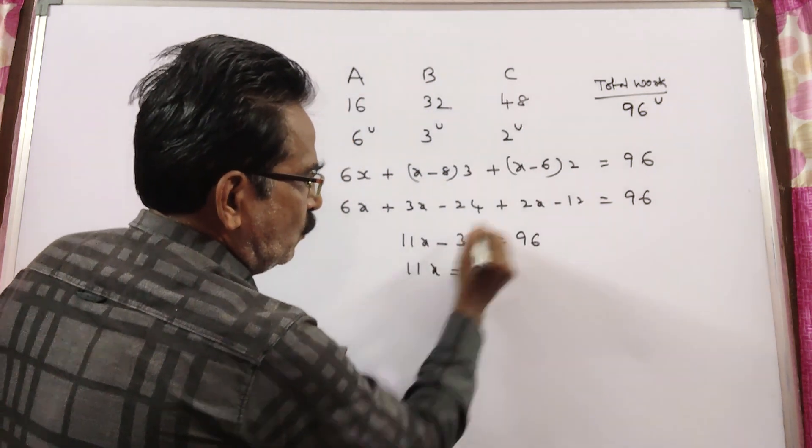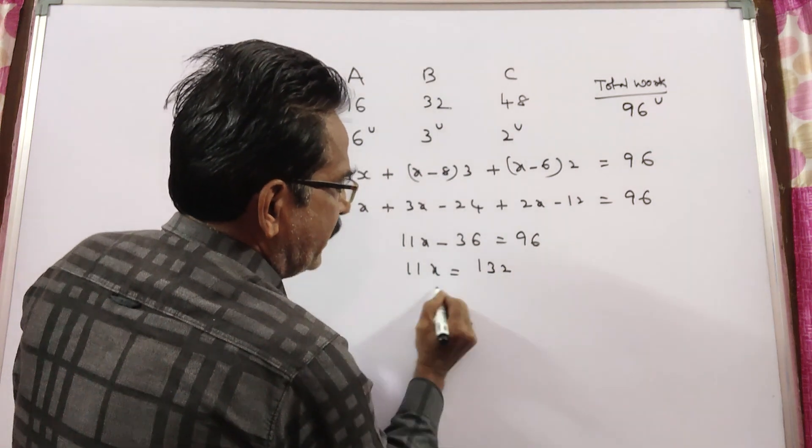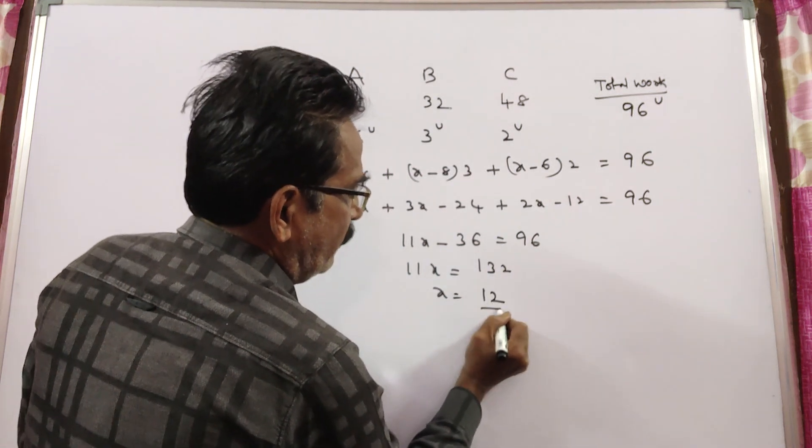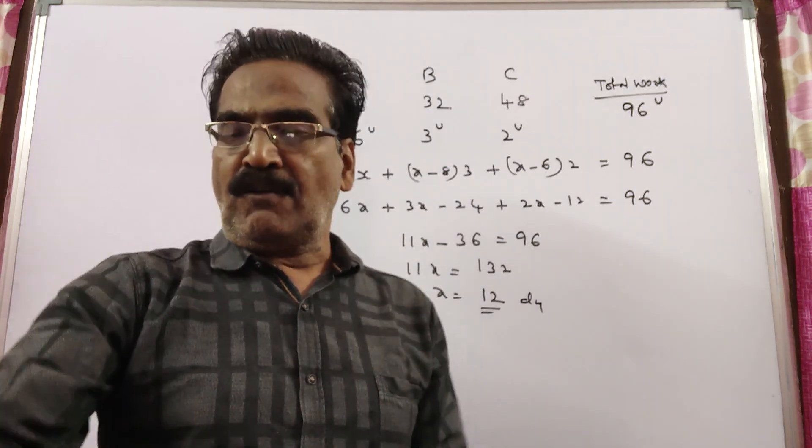Friends, 11X is equal to 132. X is equal to 12. So, the work lasted for 12 days.